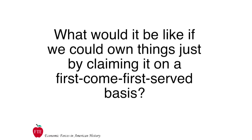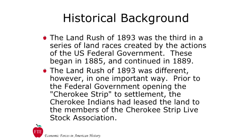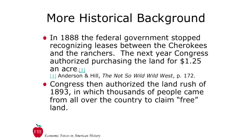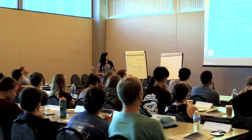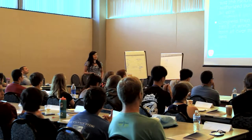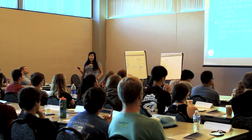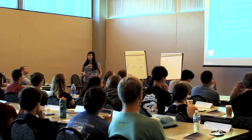Announce that today the class will be doing a simulation of a famous episode in American history where the government gave away land on a first-come, first-served basis: the Oklahoma Land Rush of 1893. Show the scenario visual included in the lesson materials and read through it with the class. Emphasize that families brought everything they owned with them — their resources packed into wagons. Congress authorized the land rush in 1893, in which thousands of people came from all over to claim free land.